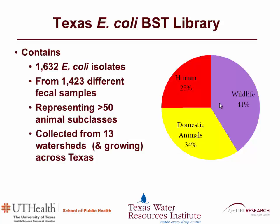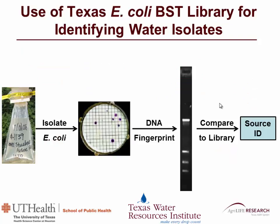We've tried to distribute our BST library pretty evenly. We've got a lot of wildlife because there's just more species there, but about a third is from domestic animals and a quarter from humans. We've done collections from more than a dozen watersheds across the state, and as we do new projects, we continually add to and expand our library. Now that we have our library, we can collect a water sample, isolate the E. coli, get our DNA fingerprint, and compare it to the library to come up with our source ID.